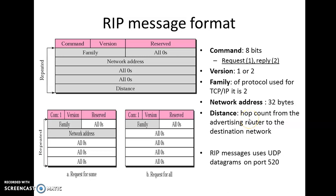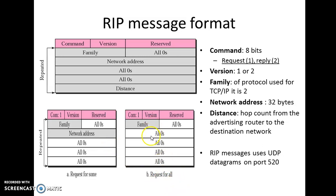Hop count indicates the number of routers present when data travels from source to destination. There are two message formats: one for a request for all and one for a request for some. If the request is for some specific routers, a specific network address is included. If it is for all, the network address field contains all zeros. So the key difference between the two formats is that the 'for some' format includes a network address, while the 'for all' format has all zeros in that field; otherwise both formats are more or less similar.